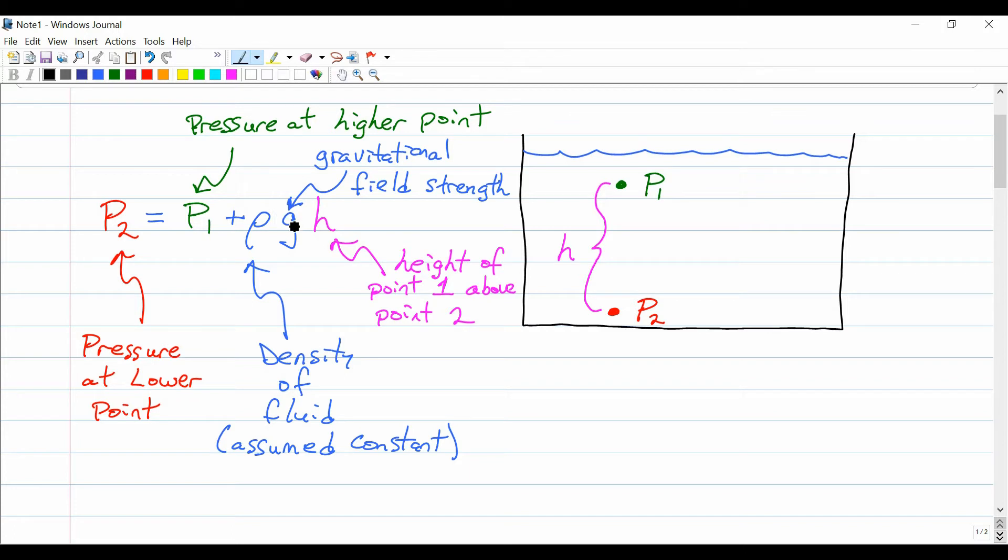G. What planet are we on? Are we on the Earth, the Moon, or Mars? The strength of gravity would actually matter because it would add to the weight of that fluid. And of course, H itself. If the two points are very close together, then the additional pressure down below will not be much. If the points are separated by a greater distance, of course, that pressure difference will be itself greater.